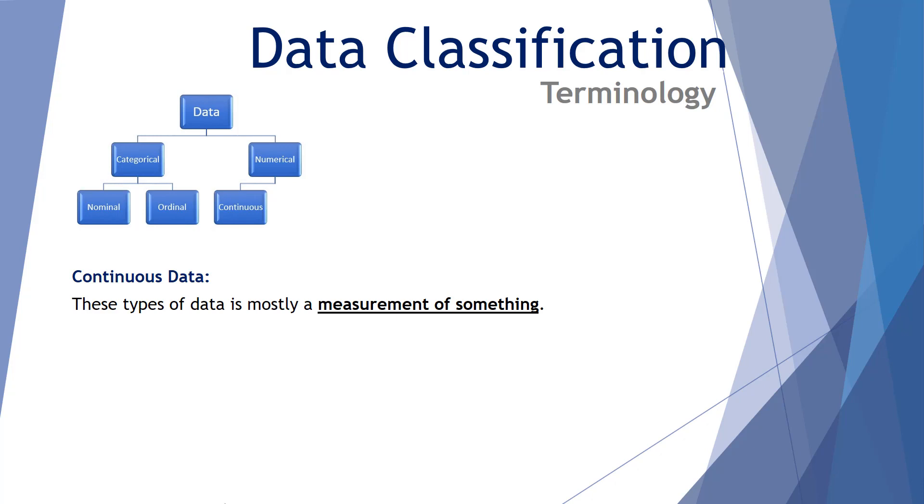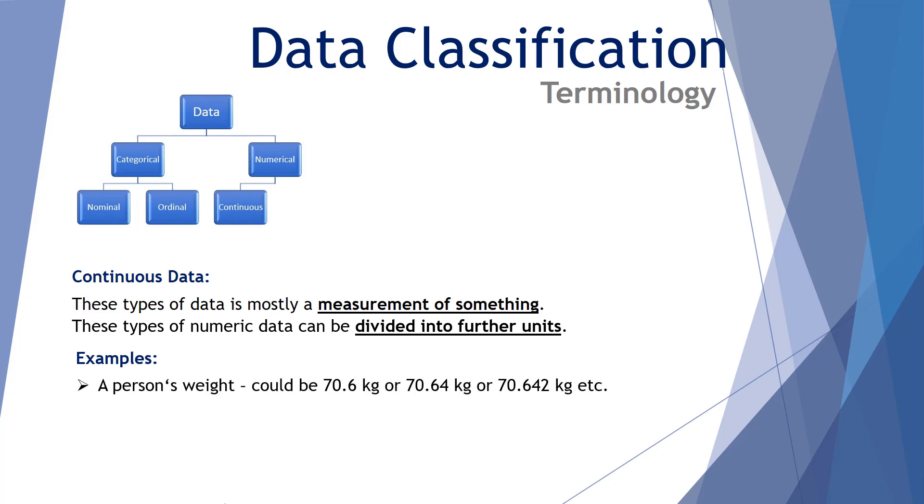The first of which is continuous data. These types of data are mostly a measurement of something. This type of numerical data can be divided into further units. For example, a person's weight. That's a measurement. It could be 70.6 kilograms or it could be measured more precisely as 70.64 kilograms or even more precisely as 70.642 kilograms. The measurement of a person's weight has infinite possibilities depending on the precision of how you measure it.